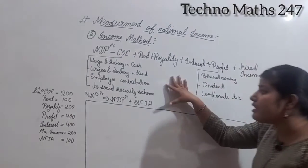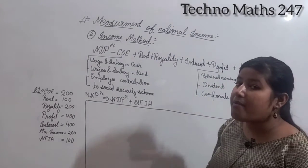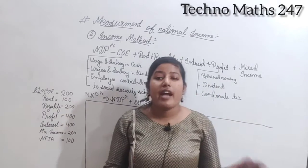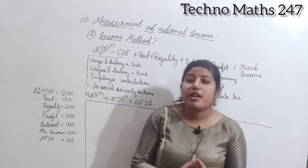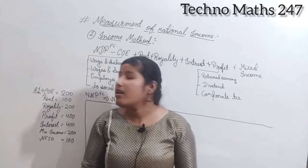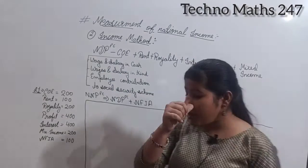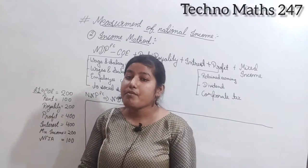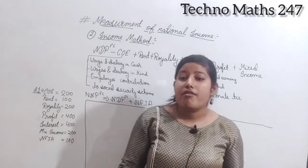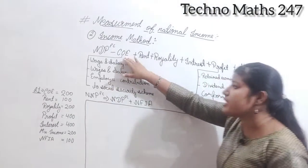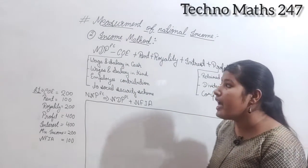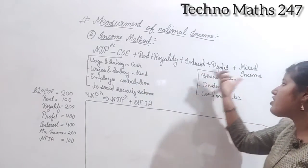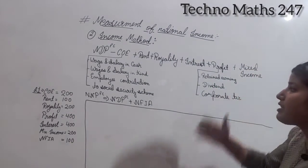By the income method, we calculate NDPFC — that is, Net Domestic Product at Factor Cost. In this we add: COE (Compensation to Employees), rent, royalty, interest, profit, and mixed income.